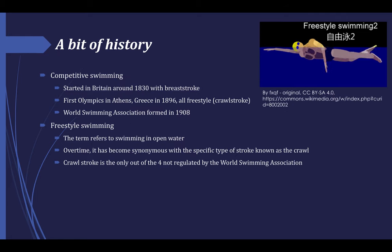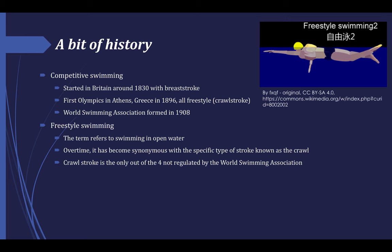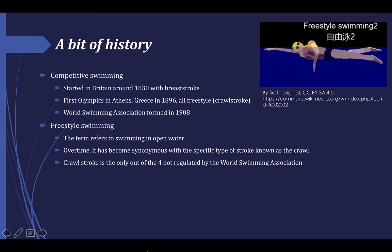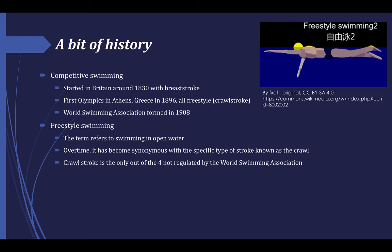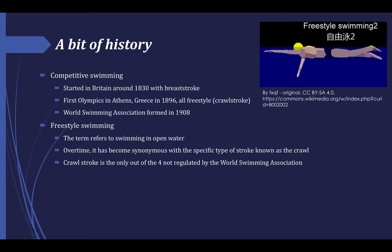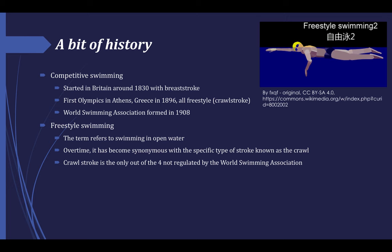To start off, a little bit of history on swimming. Competitive swimming started in Britain at around 1830, originally just competing with the breaststroke. The first Olympics with competitive swimming was held in Athens, Greece in 1896, and in this event all the strokes were freestyle, also known as crawl stroke. You can see an example of this in the image in the upper right hand corner. The World Swimming Association was then formed in 1908. Freestyle swimming is typically referred to as swimming in the open water, but over time people have referred to it synonymously with a specific type of stroke known as the crawl. Crawl stroke is the only stroke out of the four general ones not regulated by the World Swimming Association.